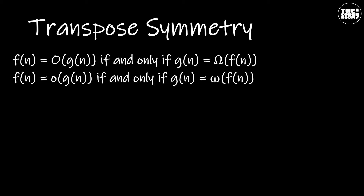Our next property is transpose symmetry. A function f(n) is the Big O of g(n) if and only if g(n) is the Big Omega of f(n). Also, a function f(n) is the small o of g(n) if and only if g(n) is the small omega of f(n).